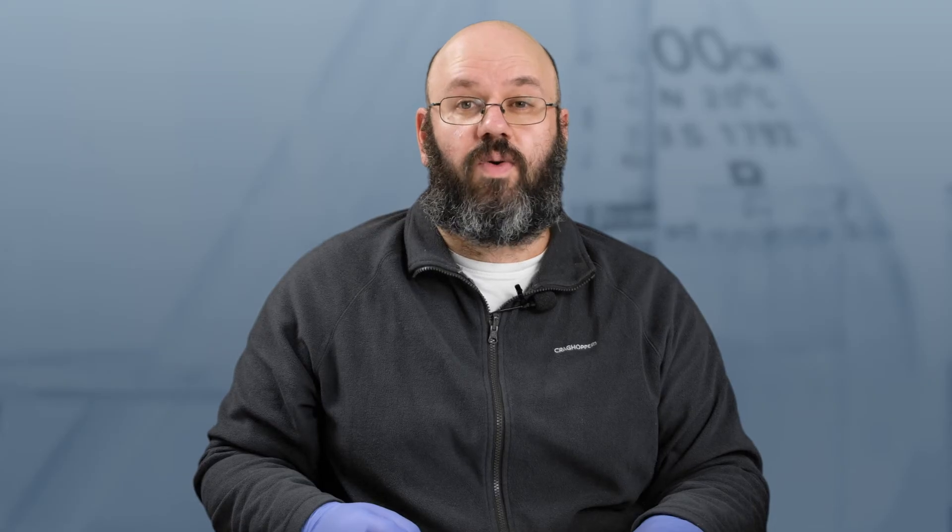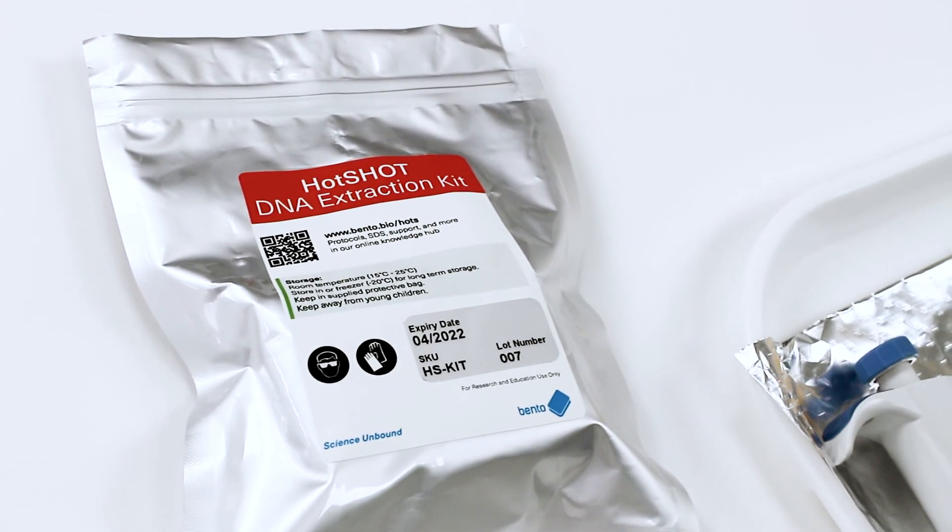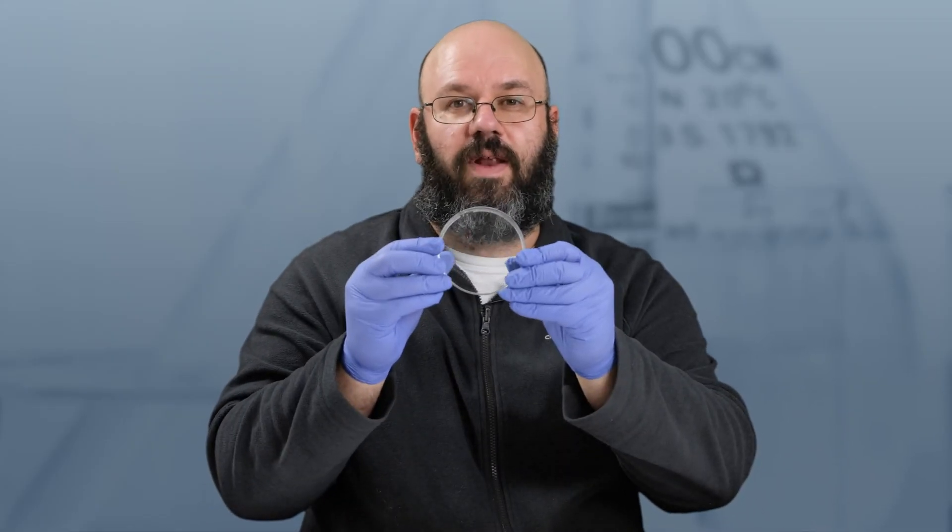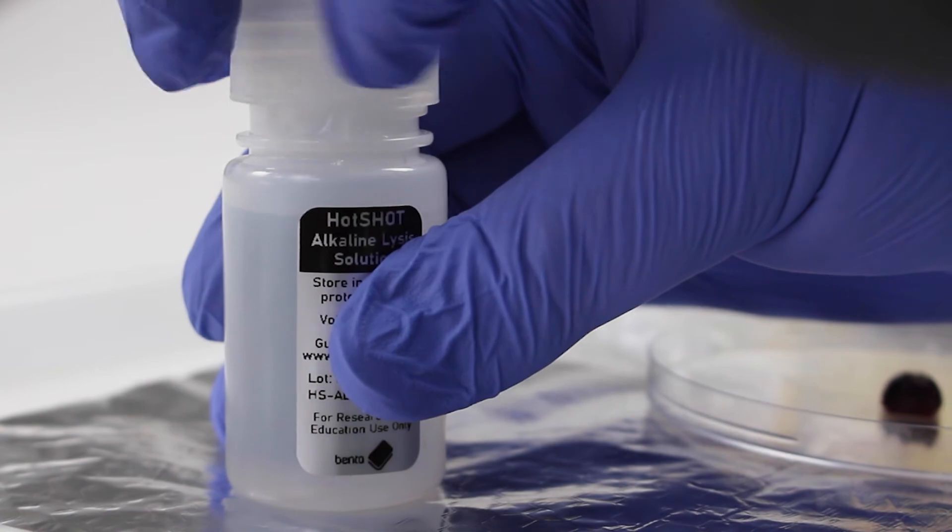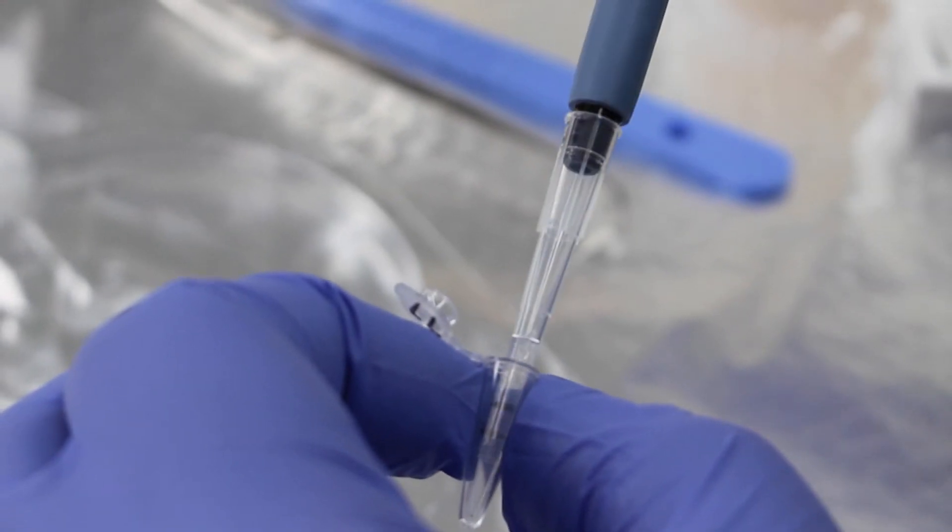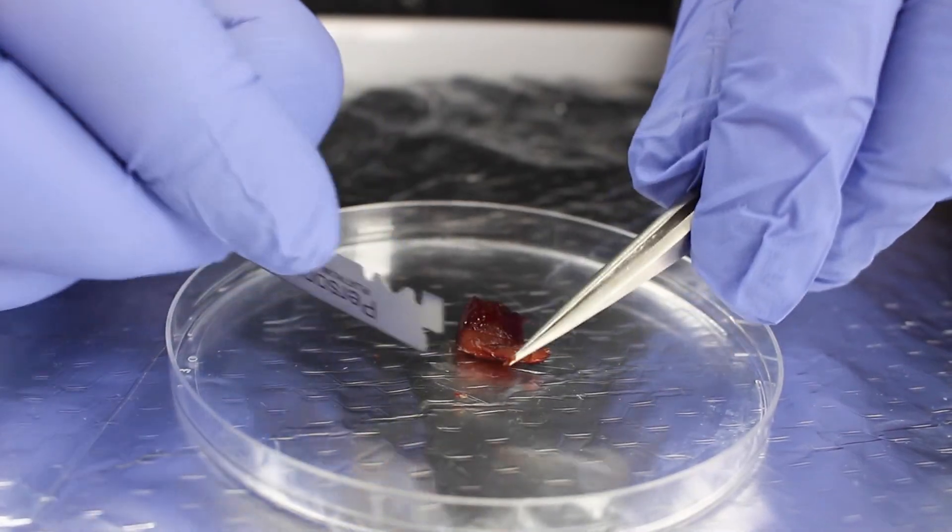Now let me give you a quick demo. I'll be using the Bento Hotshot Kit. I've prepared a very small sample of lamb liver. First, I'll be adding a very small amount of alkaline lysis solution to a PCR tube. Then I will add the sample.